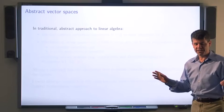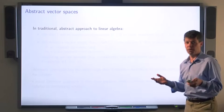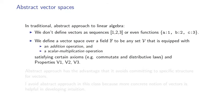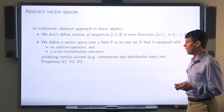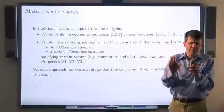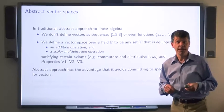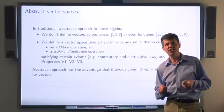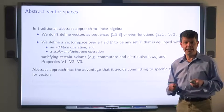A disclaimer: in a traditional, more abstract course on linear algebra, we wouldn't define vectors as sequences or functions. Instead, we would define a vector space to be any set with an addition operation and a scalar multiplication operation satisfying certain axioms, including properties V1, V2, and V3. This approach has advantages — a more abstract definition means you don't have to be concerned with the internal structure of the objects, analogous to encapsulation or information hiding in object-oriented programming. However, I took a less abstract approach for this course because a concrete representation helps in developing intuition about vectors.